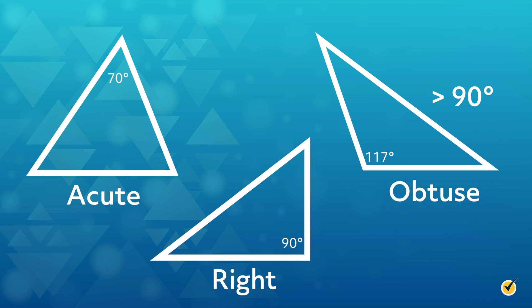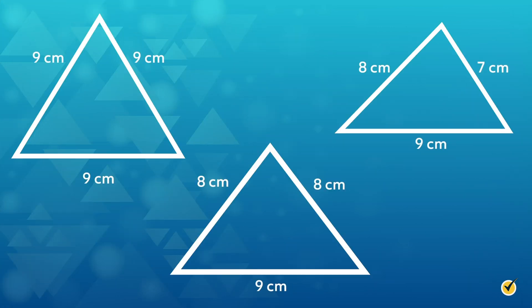That's all there is to it for these three types. We just find the largest angle, and the name of the triangle will correspond to the name of that angle. Our second set of triangles is categorized by how many of the sides have the same length.